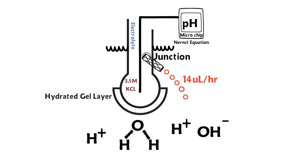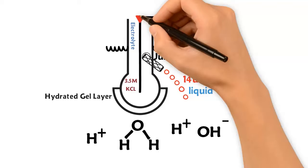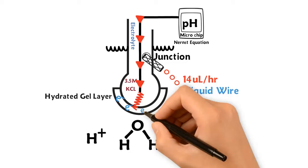A millivolt electrical charge is supplied to the wire from the meter's battery. The millivolt charge will flow down the wire through the glass bulb, electrifying the hydrated gel layer.